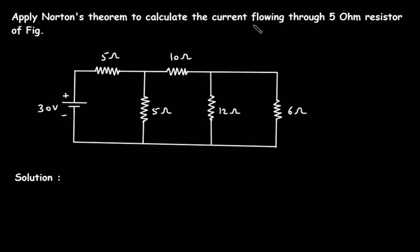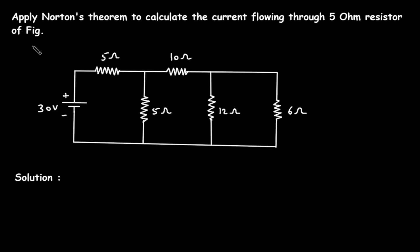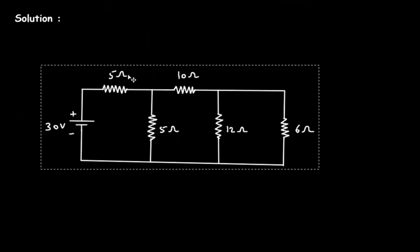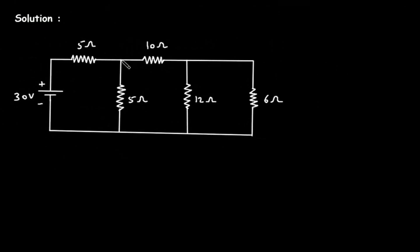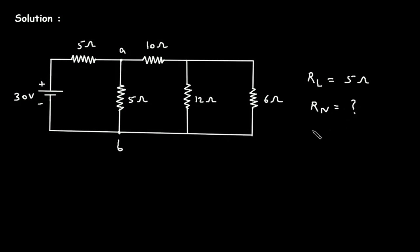Apply Norton's theorem to calculate the current flowing through the 5 ohm resistor. We have to calculate the current flowing through this 5 ohm resistance using Norton's theorem. Let's say this is terminal A and this is terminal B, so between terminal A and B, RL is equal to 5 ohm. For Norton's equivalent circuit, we have to find Rn — that is Norton's resistance — and In — that is Norton's current.